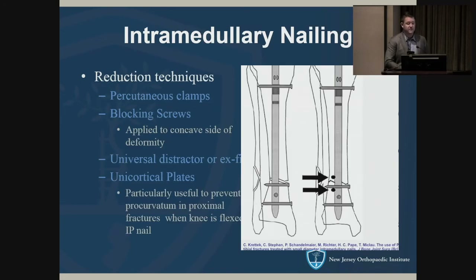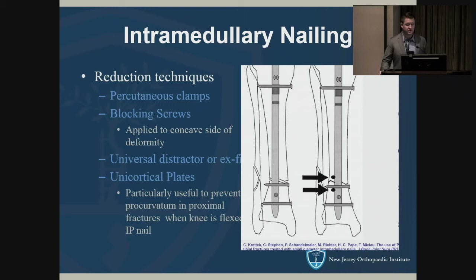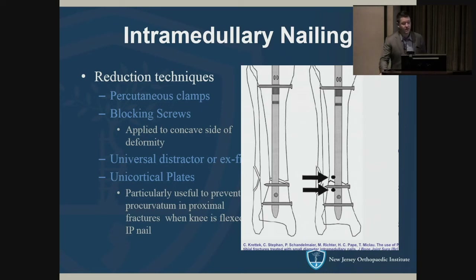There are multiple tools to get and hold reduction during nailing. You can use percutaneous clamps or blocking screws — as shown in the image, you place them on the concave side of the deformity, forcing the nail over and preventing the deformity. You can also use a distractor or an external fixator. Unicortical plates are an option, particularly in open fractures when you're already visualizing the bone.